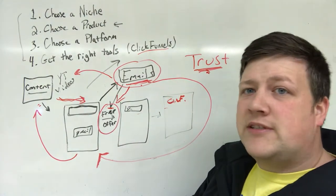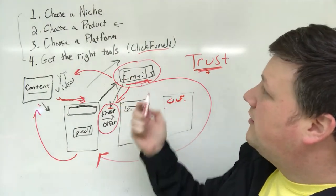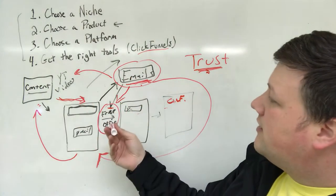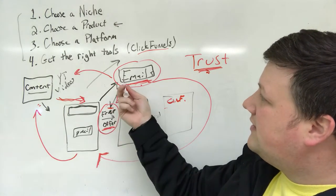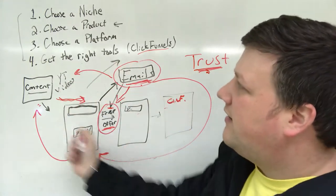So building trust is huge. And this is the affiliate marketing system. This is pretty much it. Building an email list through your content, giving away free things to bait them into getting on your email list, and then repeating the cycle.